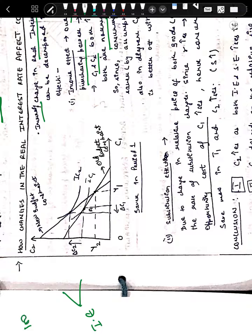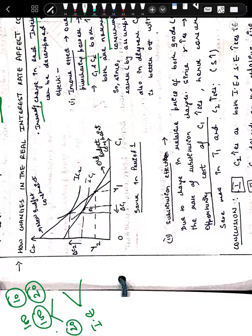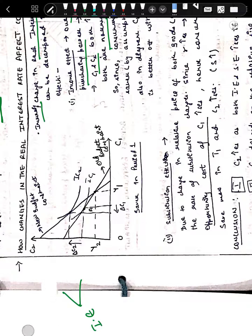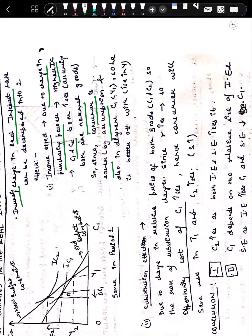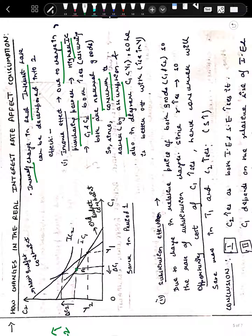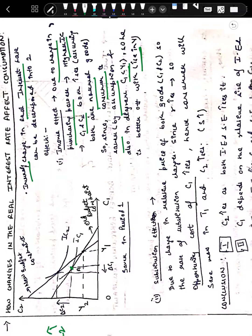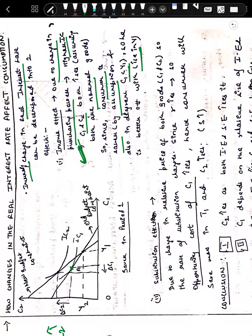For example, if a consumer was saving 100 rupees and earning 10 rupees as interest, and now the interest rate has increased so he earns 20 rupees — he might consume 20 rupees now in C1 and save 80 rupees, still earning 15 rupees in interest, which is more than before. So his consumption in time period two also increases. Since the consumer is a saver by assumption, income effect says consumption in both C1 and C2 increases. We can also verify this from the diagram — he is consuming less than his income, so he is better off with the income increase.